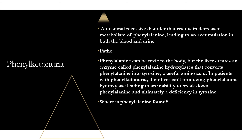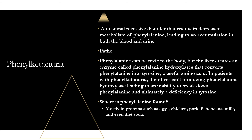Phenylalanine is mostly found in proteins — eggs, chicken, pork, fish, beans, milk — and it can even be found in diet soda. If you've ever seen a warning on a diet soda can saying 'this contains phenylalanine,' it's because of these patients specifically, who really have to decrease or eliminate their dietary intake of phenylalanine.